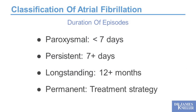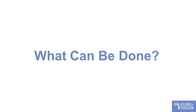We classify atrial fibrillation based on episode duration. Episodes lasting less than seven days are called paroxysmal. Seven days or more is termed persistent. A single episode lasting a year or more is longstanding. Finally, if we decide we're no longer going to try to maintain normal rhythm — having attempted everything — we term it permanent, focusing instead on stroke risk control.